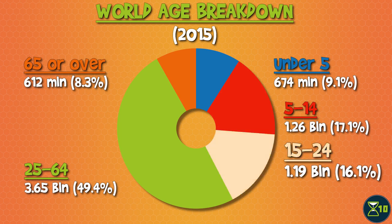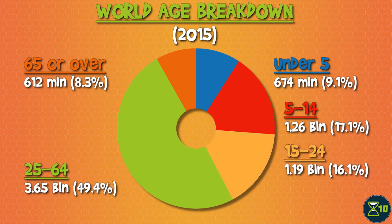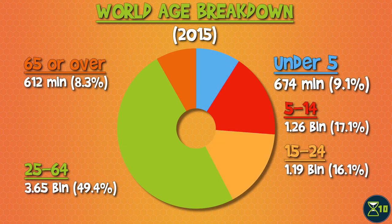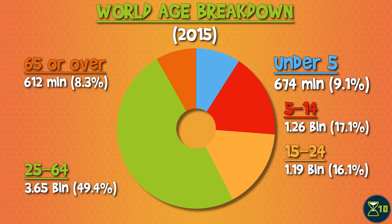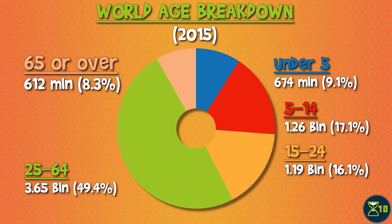Young people between 15 and 24 years old were the third largest group, with 1.19 billion people, followed by children under 5 years of age, of which there were roughly 674 million, and the over 65s, with just under 612 million people.